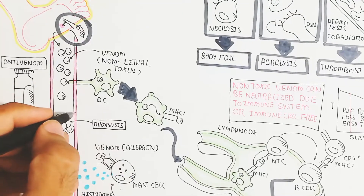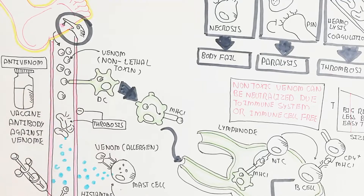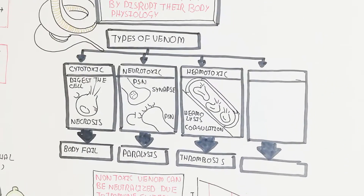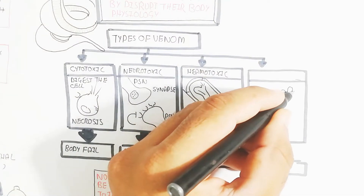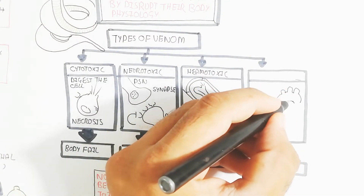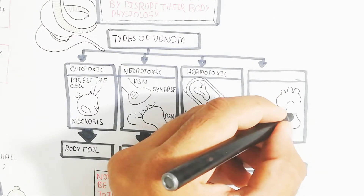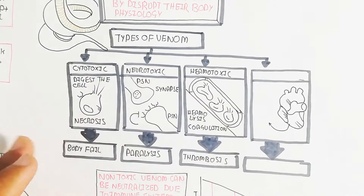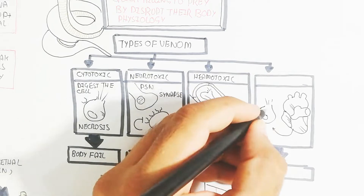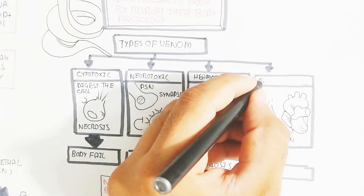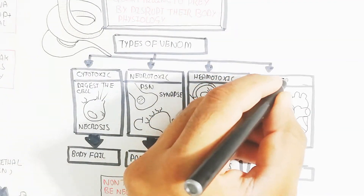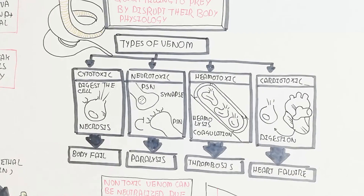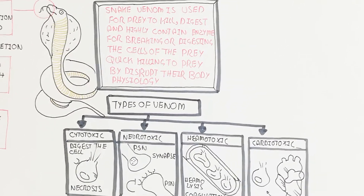Cardiotoxic venom is similar to cytotoxic but specifically targets the heart, digesting heart cells and leading to heart failure, heart attack, stroke, and other heart diseases, ultimately causing death.